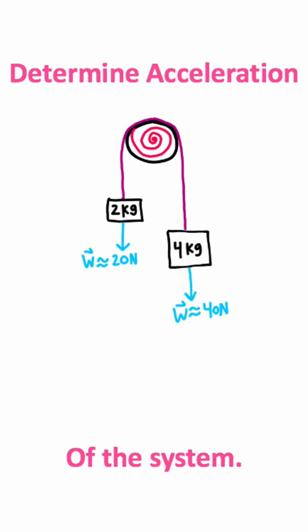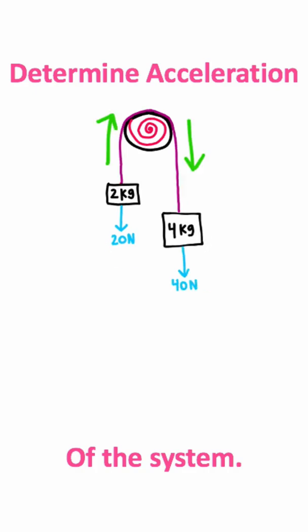Now, just intuitively looking at this system, we can tell that it's going to rotate towards the 4kg block. The reason why is because the 4kg block has a stronger weight force, so it's going to cause the system to rotate in this direction.